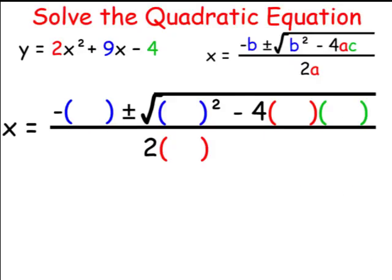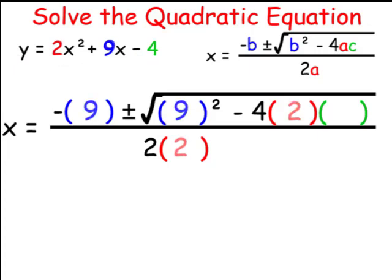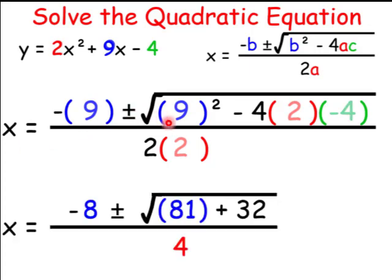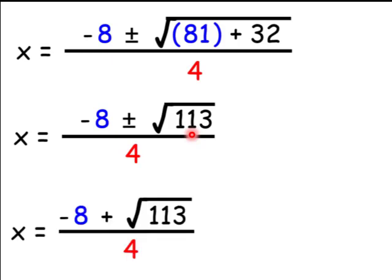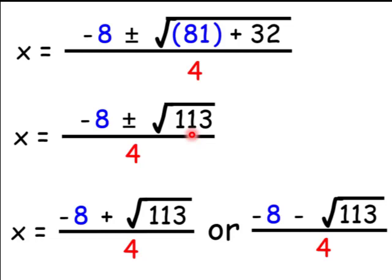Let's try one more. The equation is in standard form, so b is 9, a is 2, and c is negative 4. We simplify the radicand: 9 squared is 81; a negative times a negative is positive, 4 times 2 is 8, and 8 times 4 is 32. So 81 plus 32 is 113. There are no perfect squares that divide 113 evenly, so our two answers are: negative 9 plus radical 113 over 4, or negative 9 minus radical 113 over 4.